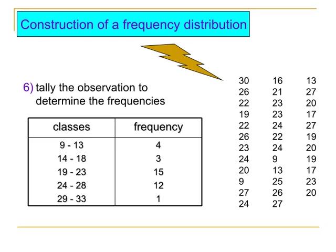The last step is to tally the observations to determine the frequencies. For the interval 9 to 13, there are 4 observations. For 14 to 18, there are 3 observations. For 19 to 23, there are 15. For 24 to 28, there are 12. And for 29 to 33, there is only 1 observation. The total sum of all frequencies is 35, which equals n, the total number of observations.